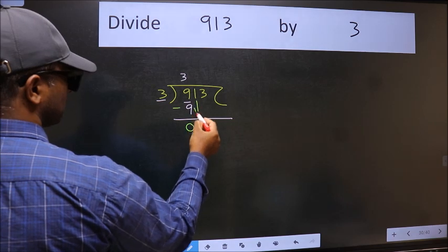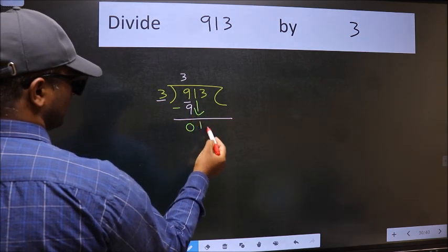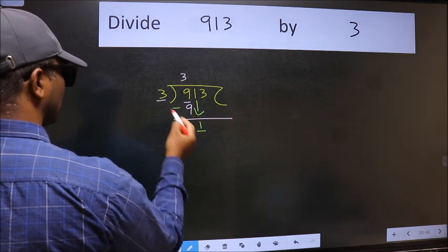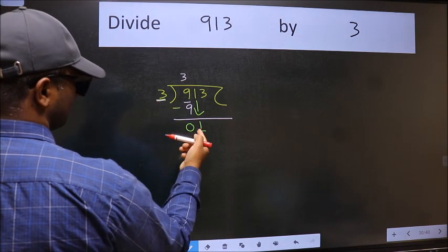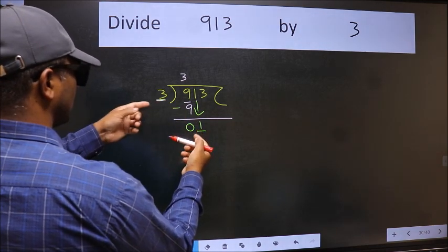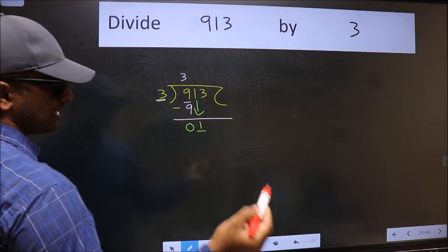After this, bring down the beside number. So 1 down. Now here we have 1 and here 3. 1 is smaller than 3, so we should bring down the second number.